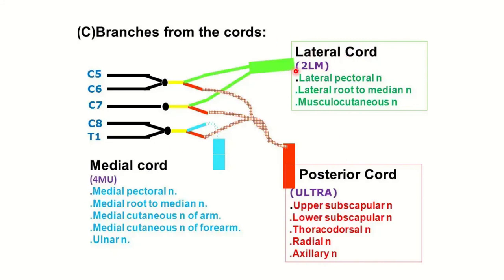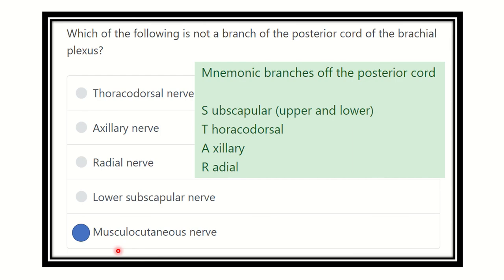For the lateral cord, the mnemonic is '2LM': lateral pectoral nerve, lateral root of median nerve, and musculocutaneous nerve. For the medial cord, the mnemonic covers medial pectoral nerve, medial root of median nerve, medial cutaneous nerve of arm, medial cutaneous nerve of forearm, and ulnar nerve.